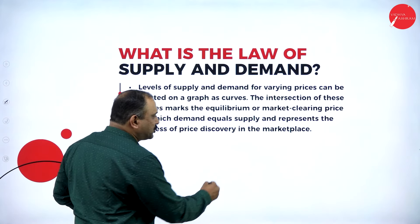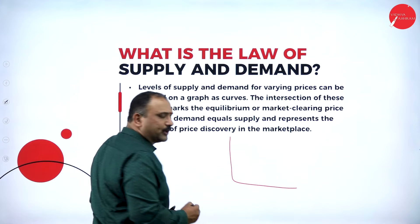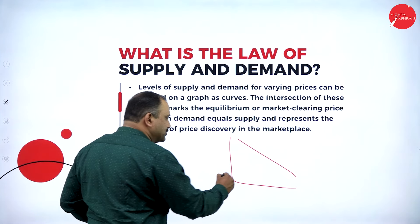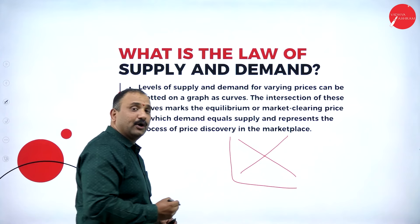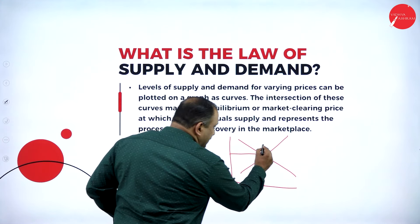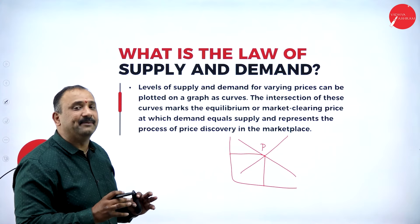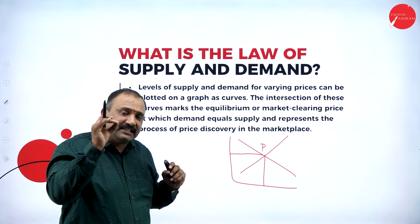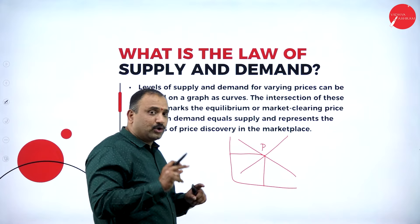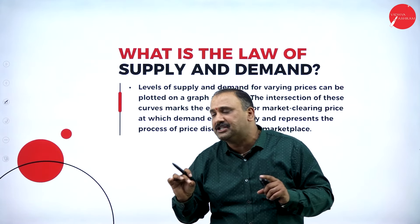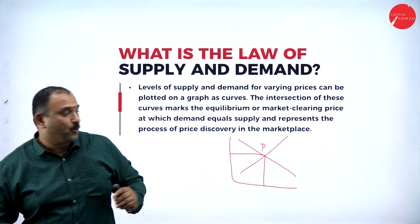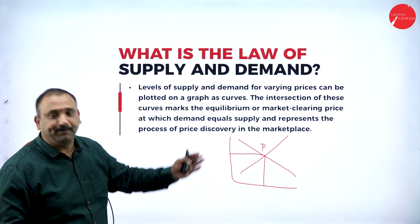Let me draw that graph. Demand is always a curve that slopes downwards towards the left, whereas supply is the opposite — a curve moving rightwards. There is an equilibrium point where these two curves meet, let's call it point P. This equilibrium point is the market clearing price — I would call it the price discovery point — because it is where the price gets accepted and the consumer proceeds with purchasing the product.